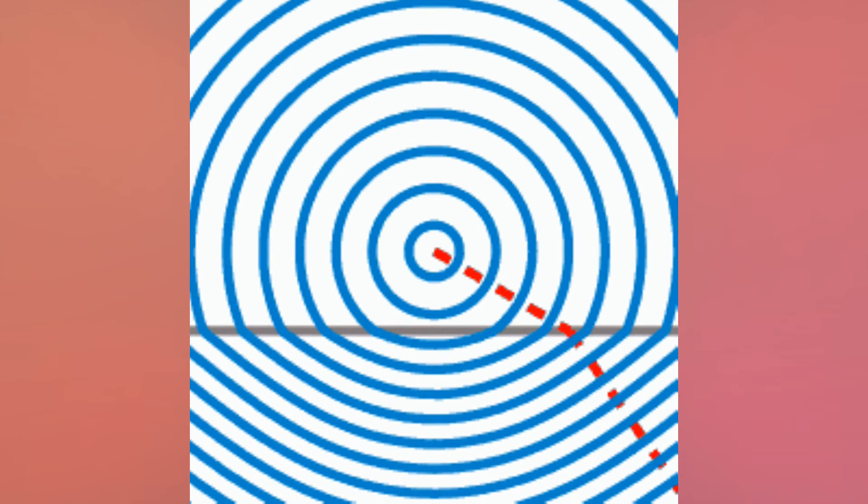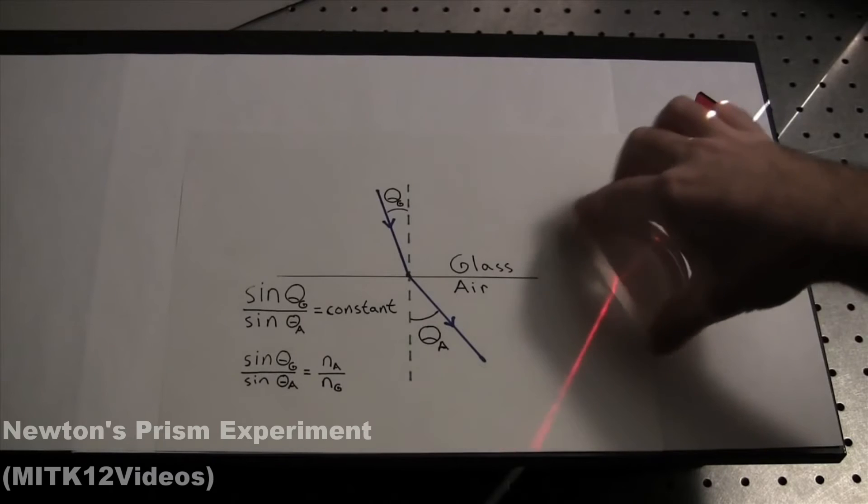Now since light moves at different rates through different materials, whenever it hits a material, like glass, it needs to slow down. And when it slows down, the direction it moves changes. Depending on the angle, this could be nothing at all to really off from how it starts.